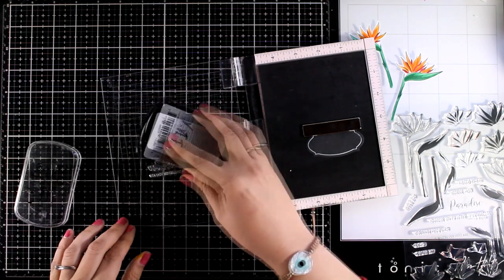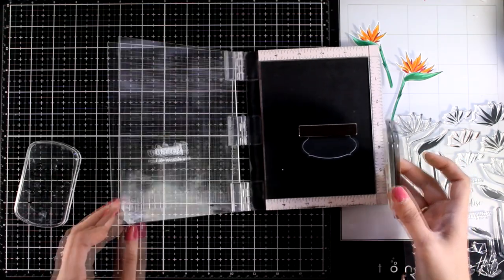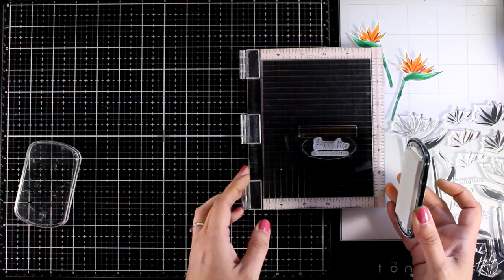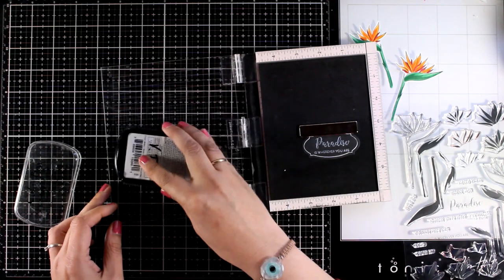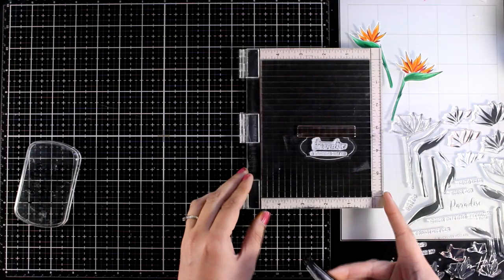However for today's card I'm going with the chalky look. That's why I'm going to stamp my sentiment with white ink. In the Bird of Paradise stamp set along with the flowers you get a lot of sentiments and I combined two of those to read paradise is where you are.